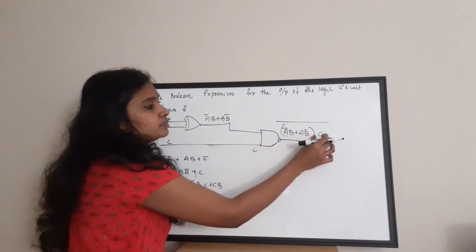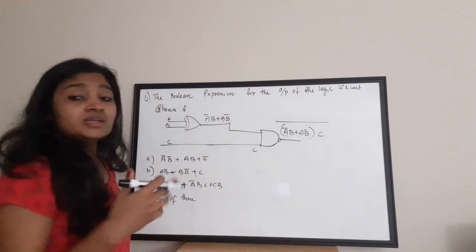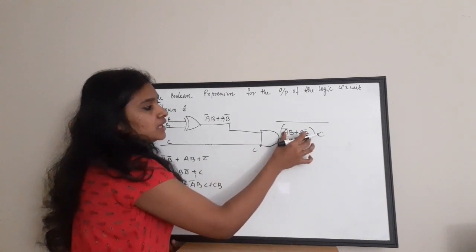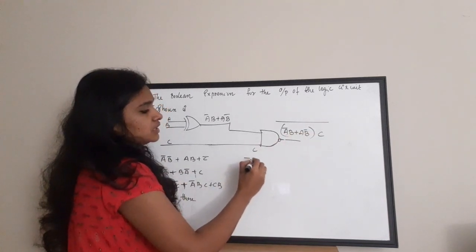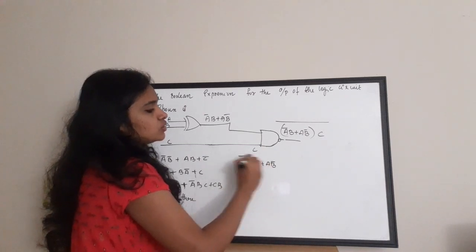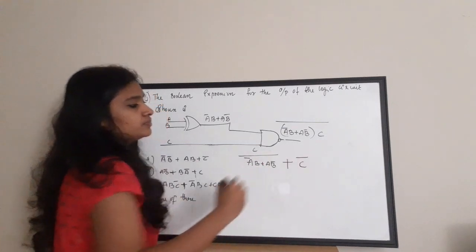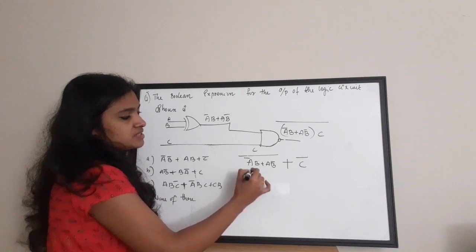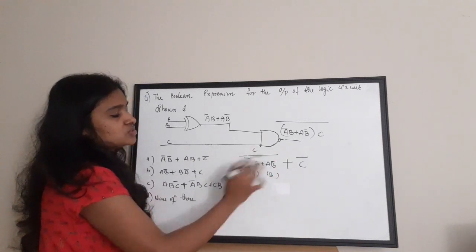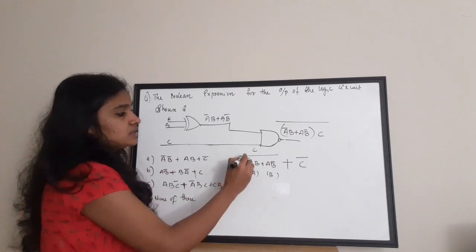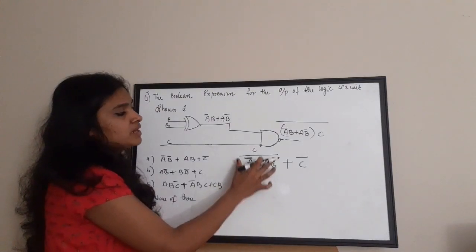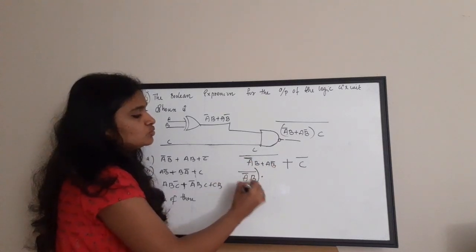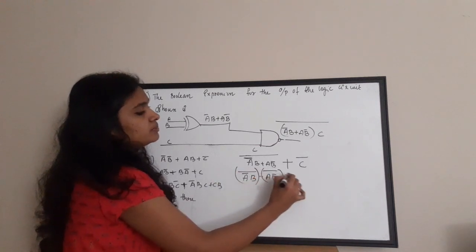Expanding the expression: (ĀB + AB̄) · C, whole bar. First, apply De Morgan's to the product term (ĀB + AB̄) · C: this becomes (ĀB + AB̄) bar + C̄. Now applying De Morgan's to the sum term (ĀB + AB̄) bar: a sum bar becomes product bar, so it becomes (ĀB) bar · (AB̄) bar, plus C̄. Expanding each product term: (ĀB) bar = A + B̄, and (AB̄) bar = Ā + B.